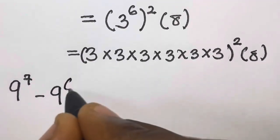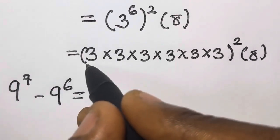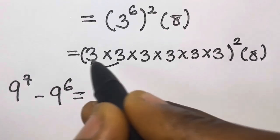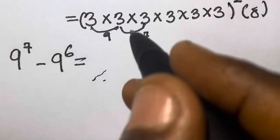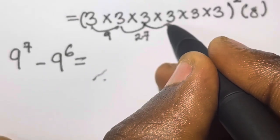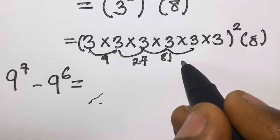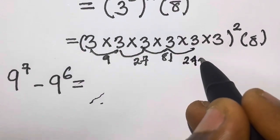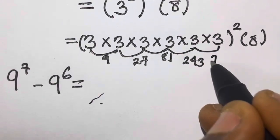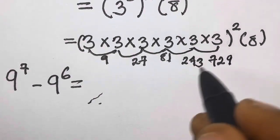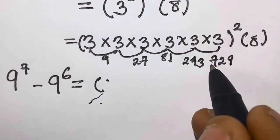So 3 raised to the power 6 means 3 multiplied by itself 6 times: 3 times 3 gives us 9, times 3 gives us 27, times 3 gives us 81, times 3 gives us 243, then 243 times 3 gives us 729.